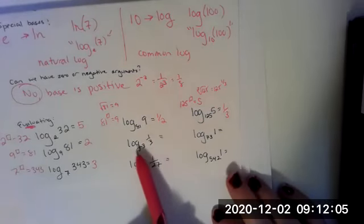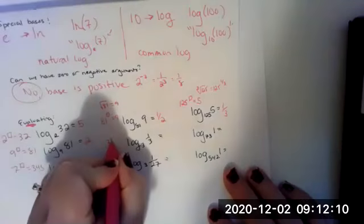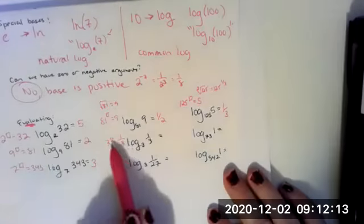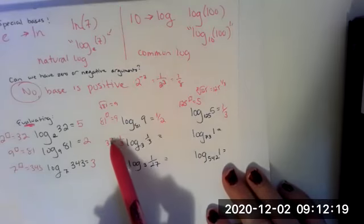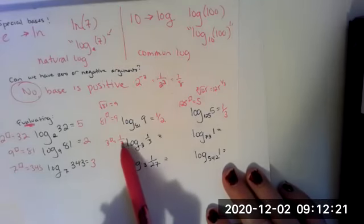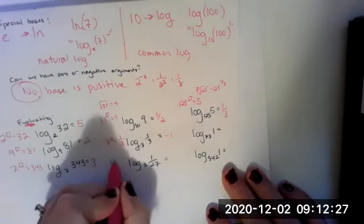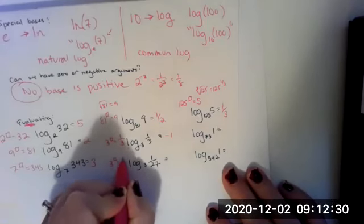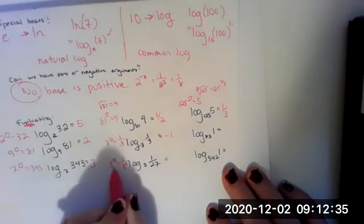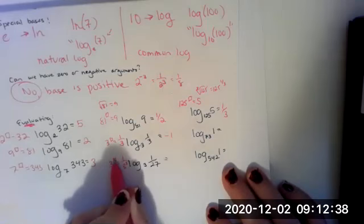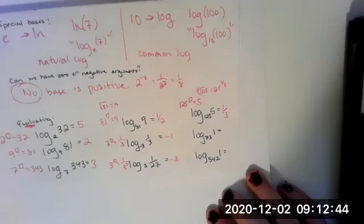Let's look at this. So log base three of one third. Three to the power of what would be one over three. So this is when you deal with negative exponents. Negative exponent, just like we kind of talked about here, makes this a fraction. You would put the power in your denominator. So this is going to be negative one. Log base three of one 27th. So 27 is three cubed. So we're going to have to use negative exponents again. Three to the negative third would be one over three to the third. So this is going to be negative three.